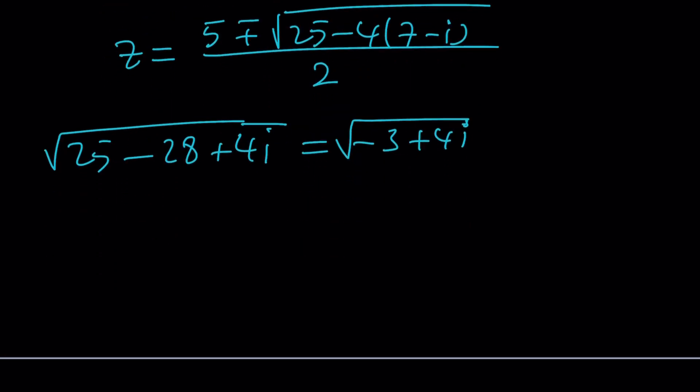And the answer is actually pretty easy. There's a formula, but if you don't want to use the formula, you can go ahead and set this equal to A plus BI because it's the name of this channel, right? And then, square both sides. And that'll give you the value of A and B, hopefully.